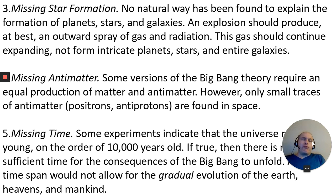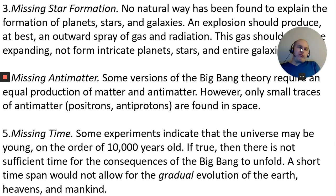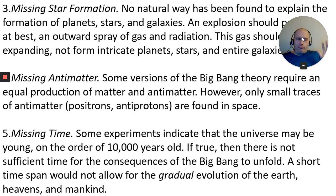Missing antimatter. Some versions of the Big Bang Theory require equal production of matter and antimatter. However, there are only small traces of antimatter in space. So there's a lot of stuff missing that should be there, basically. Even the age of the Earth. I mean, you look at the rivers. Mississippi should have a much larger delta leading into the ocean. The moon itself should have a lot more space dust on it than it does. There's a lot of things to negate this theory. But anyway.